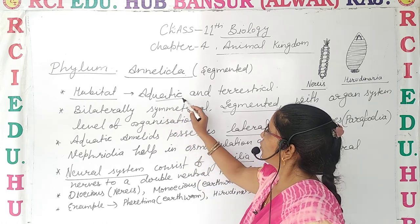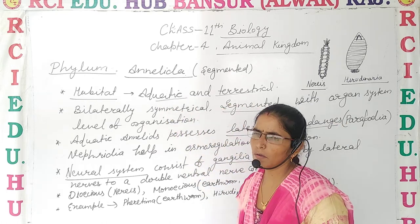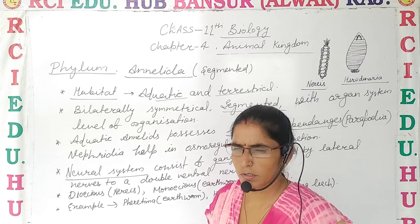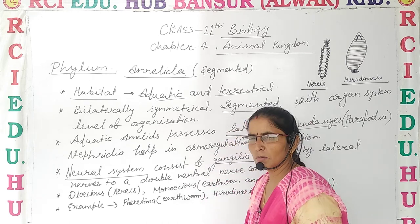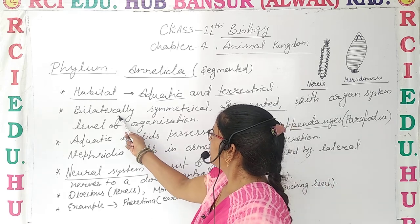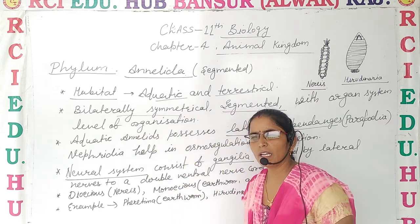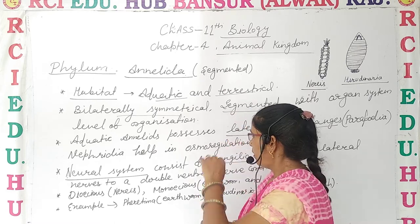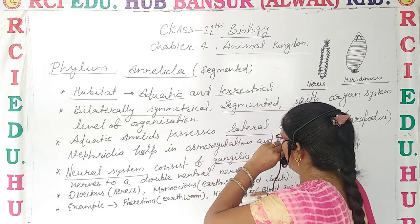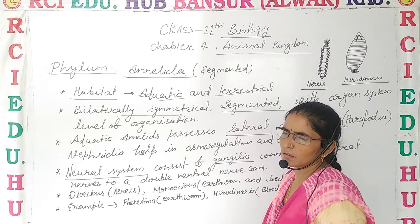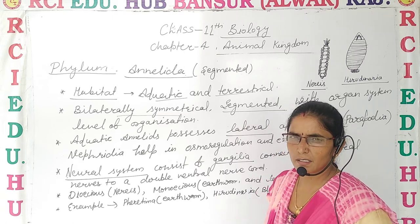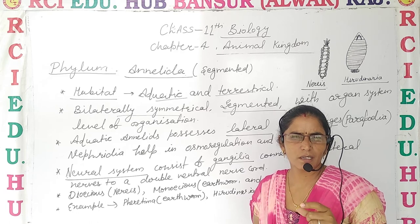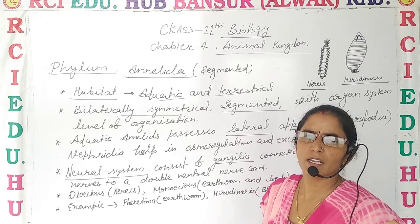Habitat: Annelids are aquatic and terrestrial — present inside water as well as on land. They are bilaterally symmetrical, meaning the body can be divided into two equal halves through a single plane. The body is segmented, appearing to consist of small ring-like structures.